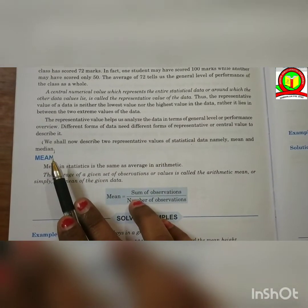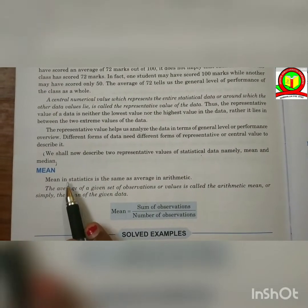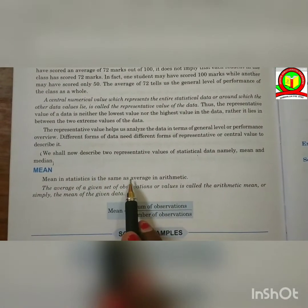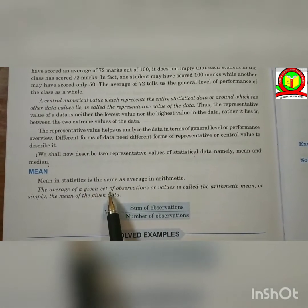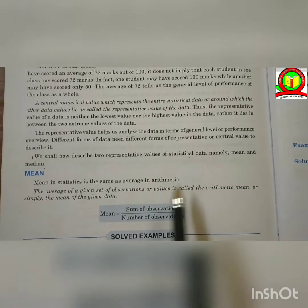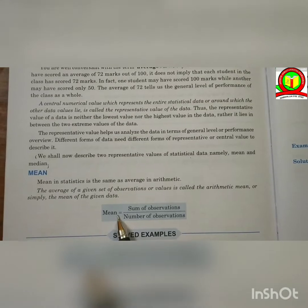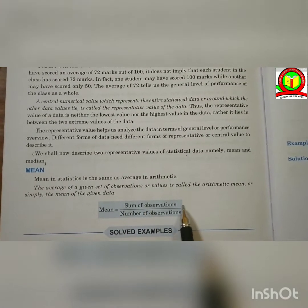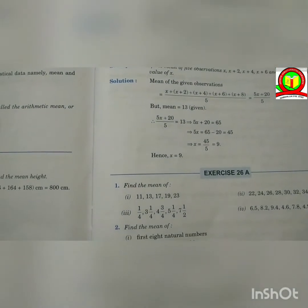Now, let's talk about mean. Mean in statistics is the same as average in arithmetic. The average of a given set of observations or values is called the arithmetic mean or simply the mean of the given data. Mean is equal to sum of observation divided by number of observation.